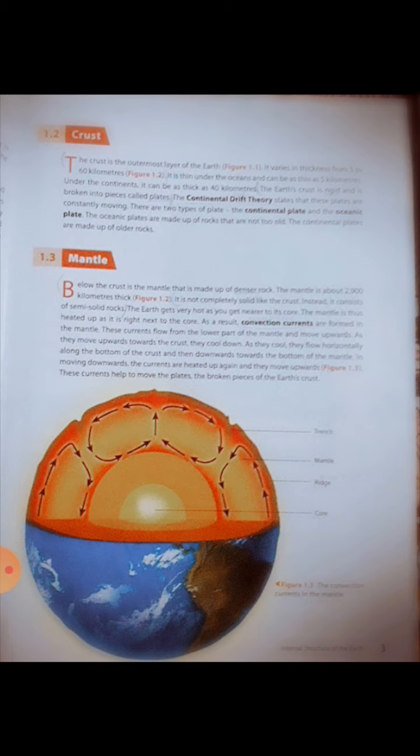The oceanic plates are made up of rocks that are not too old. The continental plates are made up of older rocks.